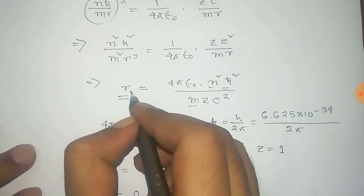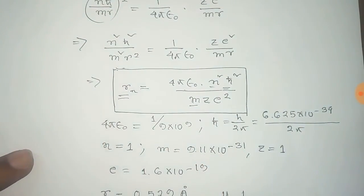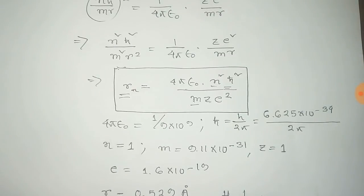And this is the expression for the radius for hydrogen-like atoms: R equals 4πε₀N²ℏ²/(MZE²).